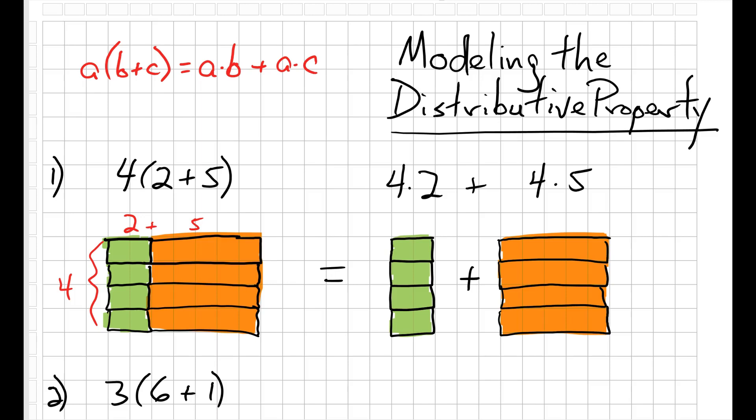So I have exactly the same number of blocks on the left side as I have on the right side. So I've just modeled the distributive property in a kind of pictorial form using colored blocks to show that 4 times 2 plus 5 equals 4 times 2 plus 4 times 5. Okay, let's do one more.